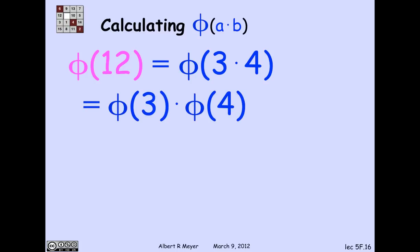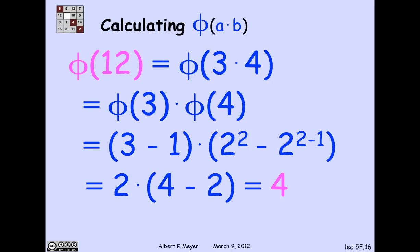But now I'm in great shape because 3 is a power of a prime, namely 3 to the 1. And 4 is a power of a prime, namely 2 squared. So applying the power of prime formulas, I get that phi of 3 is 3 minus 1 times 2 squared minus 2 to the 2 minus 1, which simplifies to 4, which is the answer that we saw before.